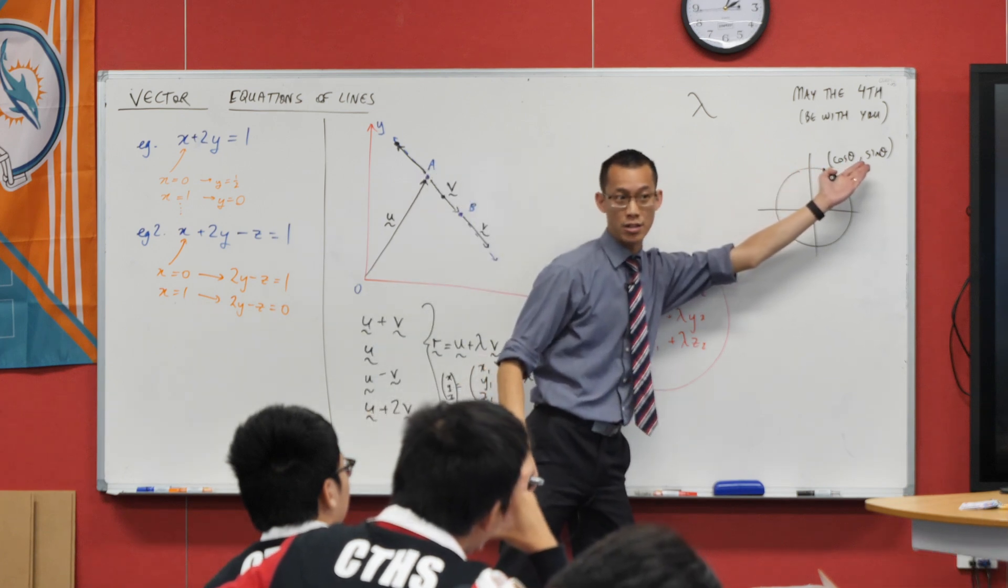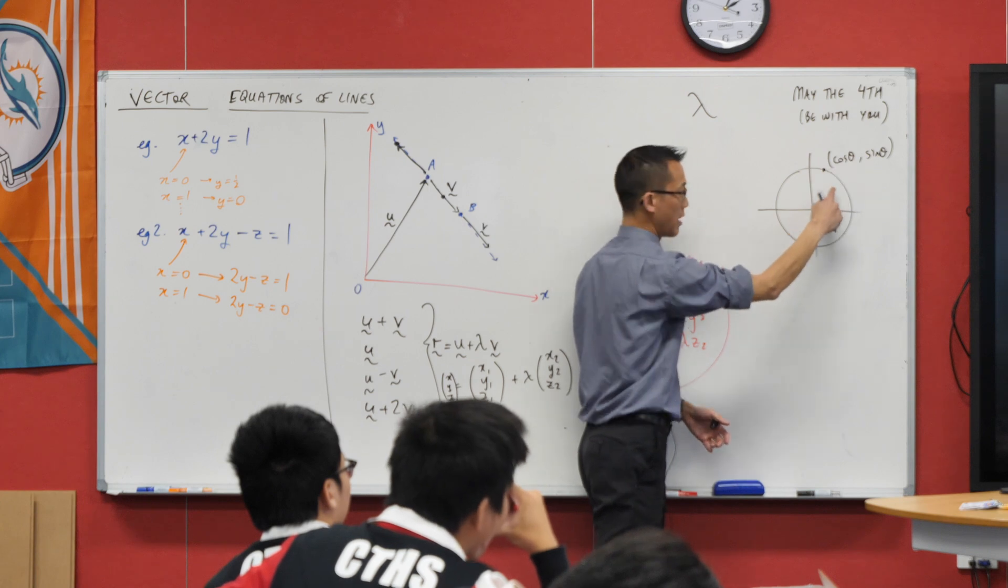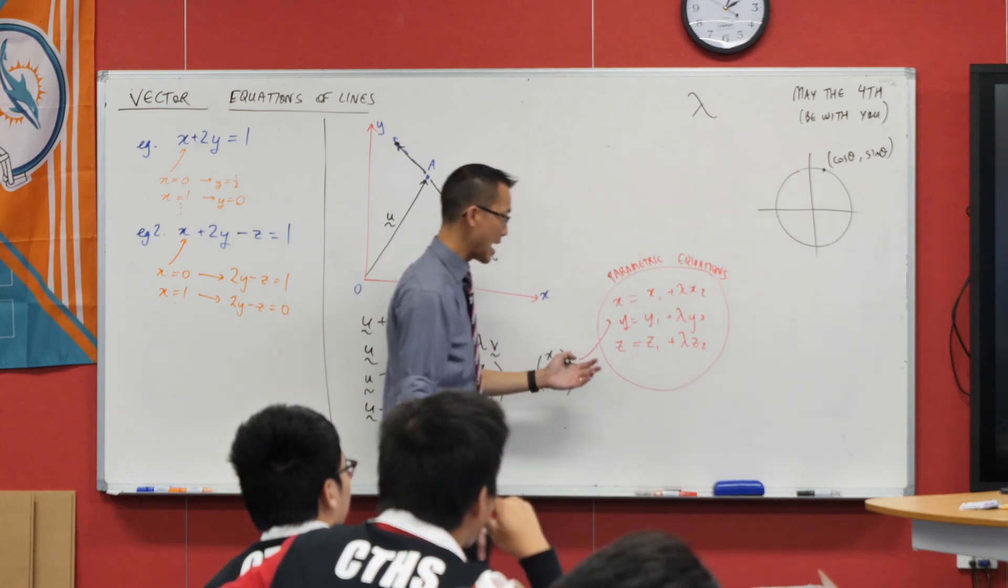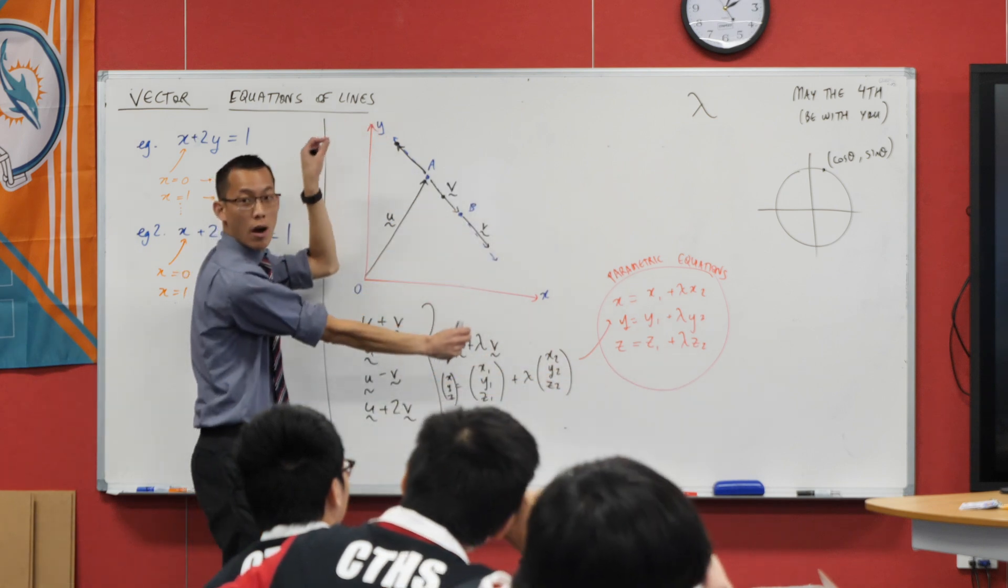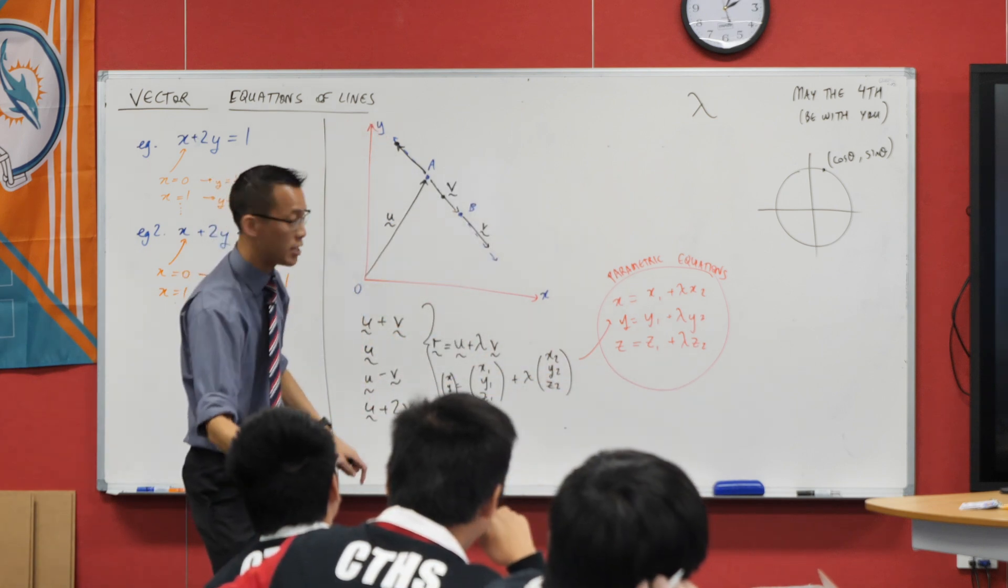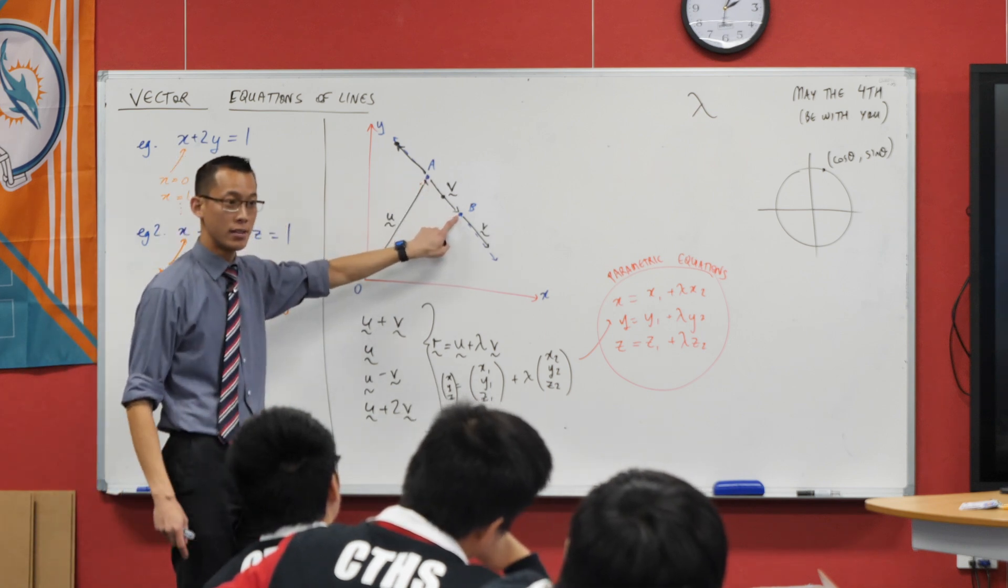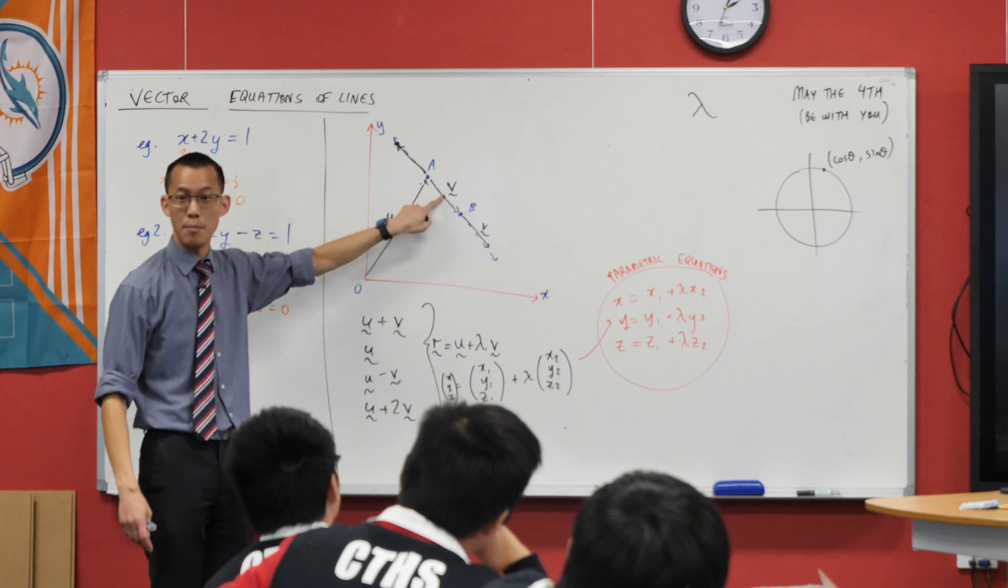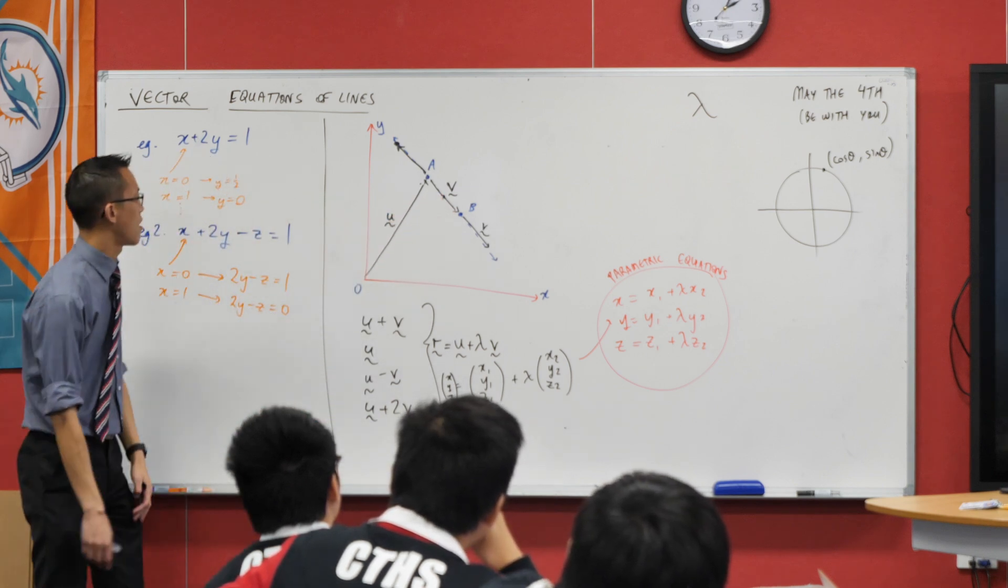Give me a theta and I'll tell you where you are in the circle. Here, give me a lambda and I'll tell you where you are on the line. Does that make sense? Give me a lambda equals zero, bam, there I am on A. Give me a lambda of one, there I'm on B. Give me a lambda of a half, on the midpoint, etc.